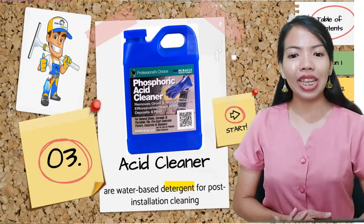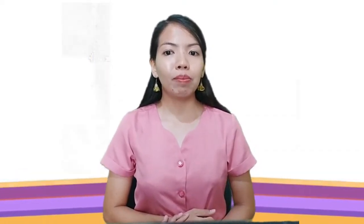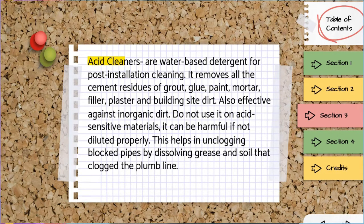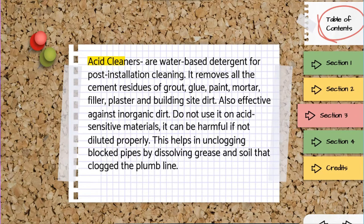Number three, we have the acid cleaner. Acid cleaners are water-based detergents for post-installation cleaning. They remove all cement, residues of grout, glue, paint, mortar, filler, plaster, and building site dirt, and are also effective against inorganic dirt. Do not use on acid-sensitive materials, as it can be harmful if not diluted properly. This also helps in unclogging black pipes by dissolving grease and soil that clog the plumb line.